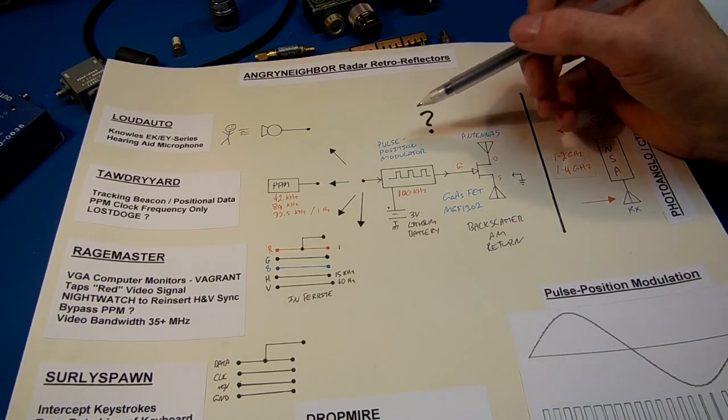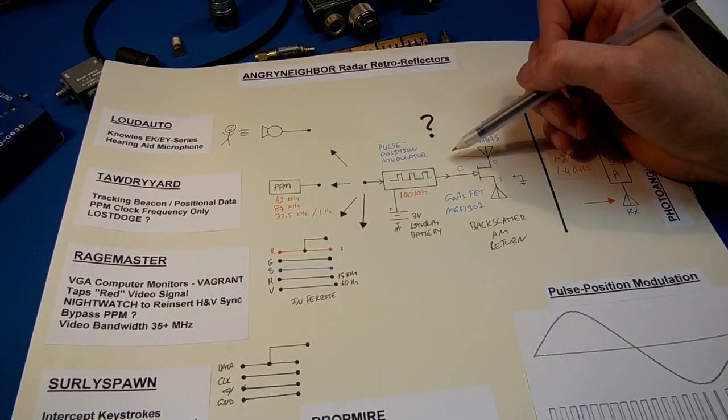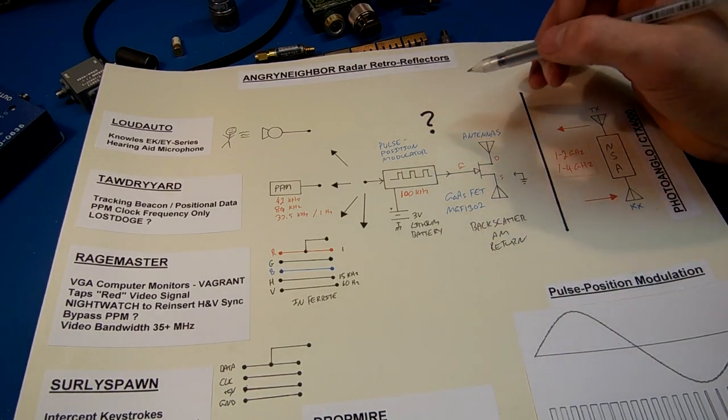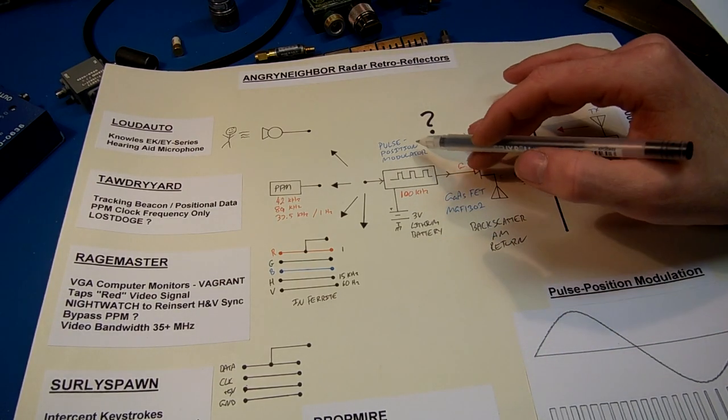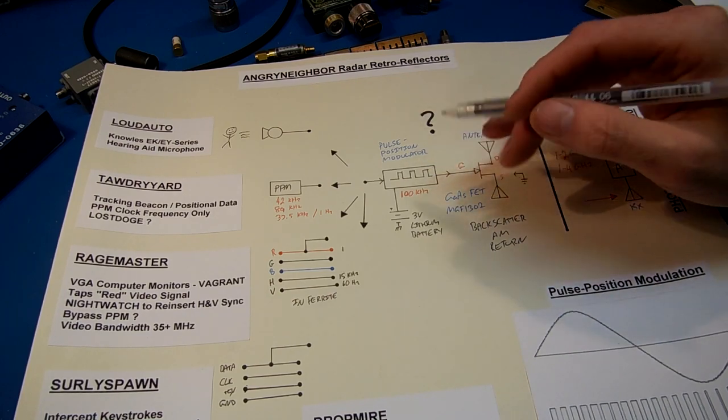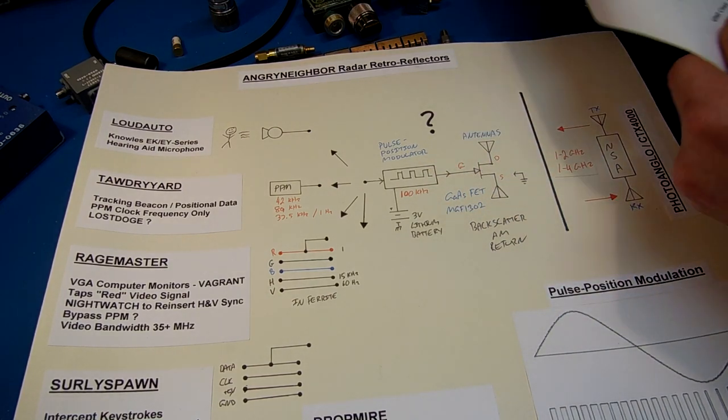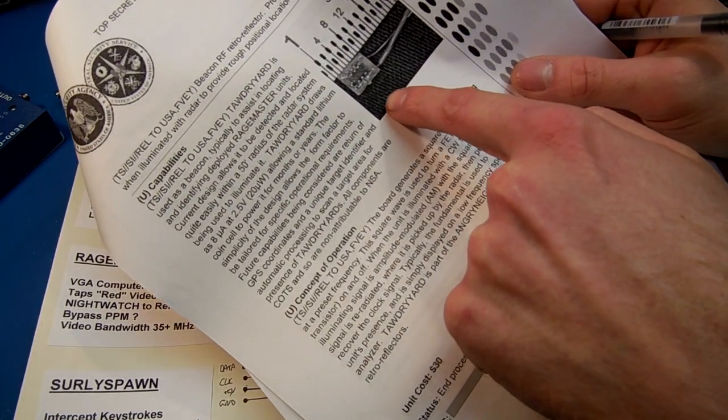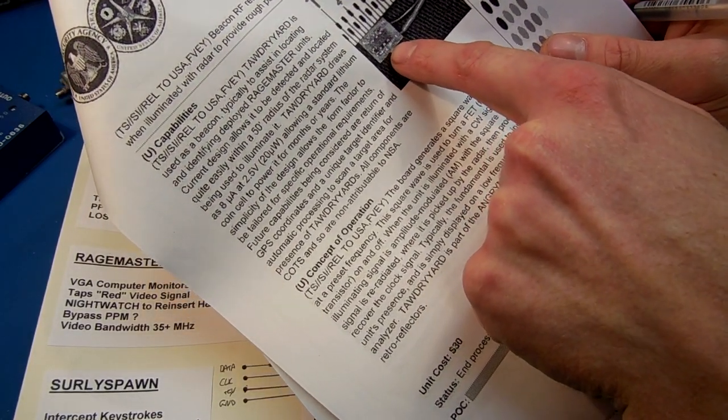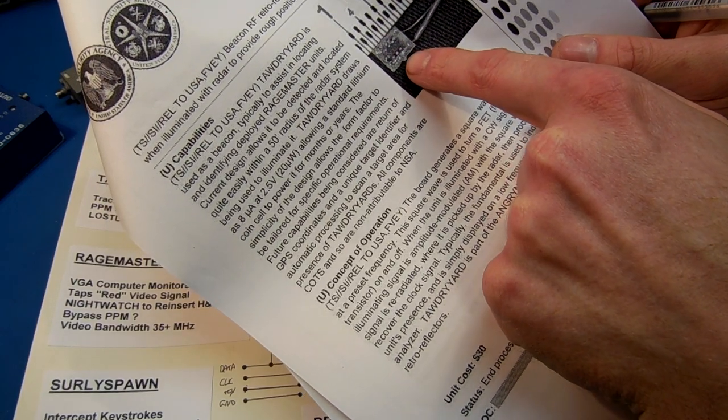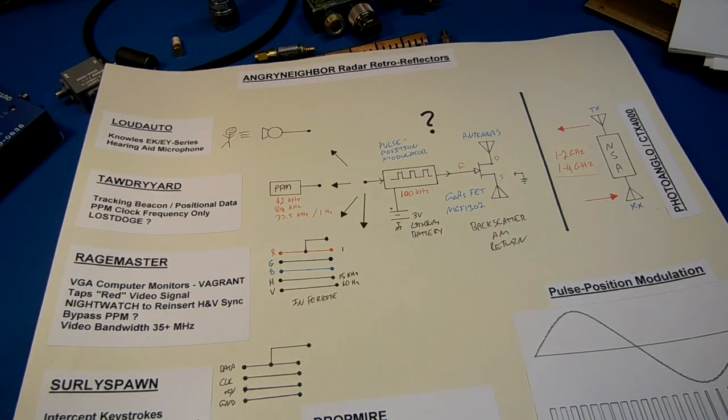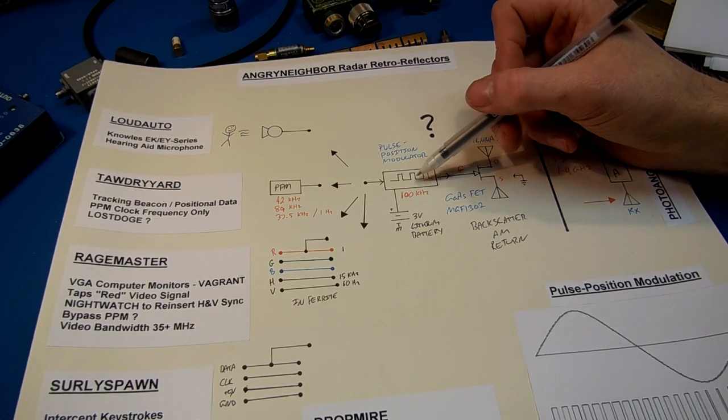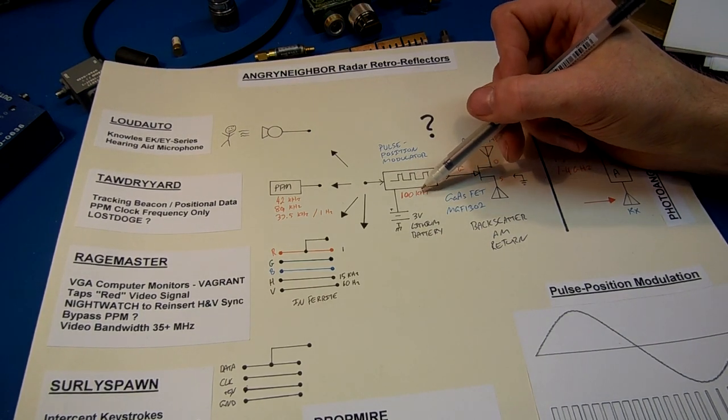The actual bug is just a guess based on the descriptions. This is most likely how it works. There's the pulse position modulator internally planted on the bug. You'll see it in the Tawdry Yard photos. A little six-pin device. Looks like a little microcontroller or whatever. It's set up as a pulse position modulator at a low frequency carrier. In this example, it's running at 100 kilohertz.